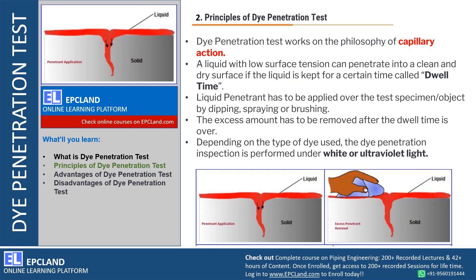To execute the capillary action, the dwell time must be fulfilled — the liquid has to stay over the surface for a particular time period so it can penetrate into the irregularities. There are few methods like dipping, spraying, or brushing with which we can apply the liquid penetrant over the test specimen. Once the dwell time is over, the excess amount of penetrant can be removed. Depending on the type of dye used, the inspection is performed under white or ultraviolet light to visually identify the penetration.